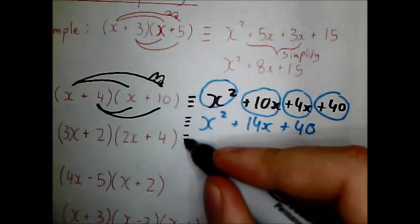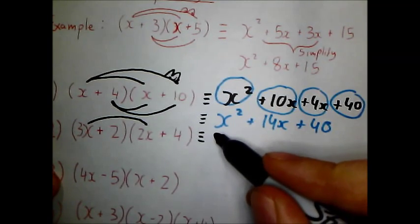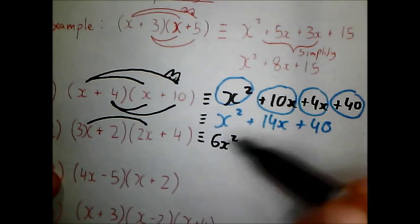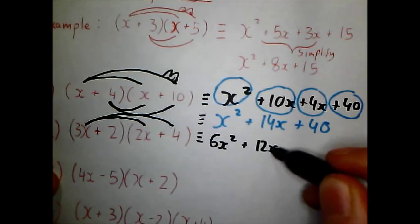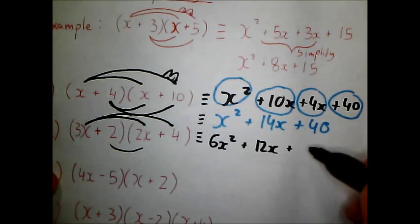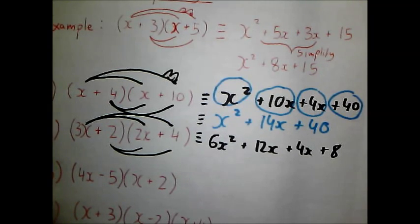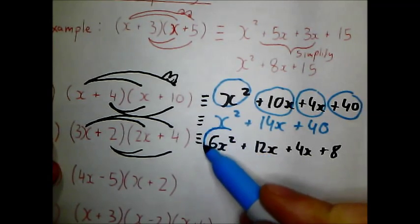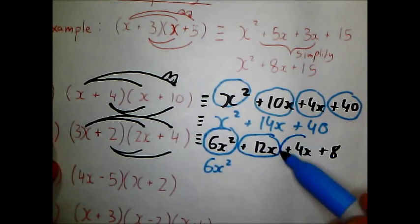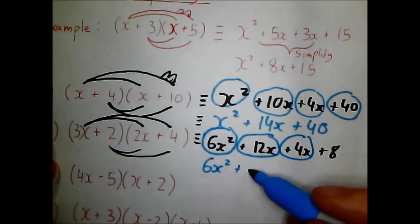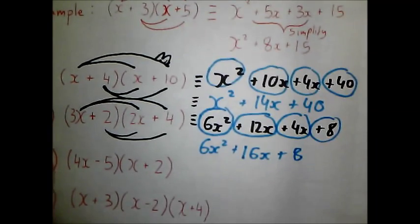Okay next one. Don't have a huge amount of space but we'll give it a go. So 3x times 2x is 6x squared. 3x times 4 is 12x. 2 times 2x is 4x. And 2 times 4 is 8. And now simplify. So I've got 6x squared here. No other x squareds. I have a positive 12x and a positive 4x. So that is going to be positive 16x. And just a positive 8 left over. And that's my question finished.